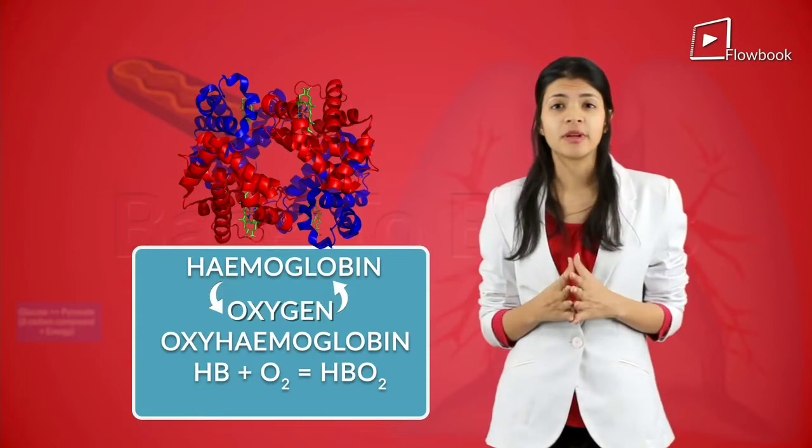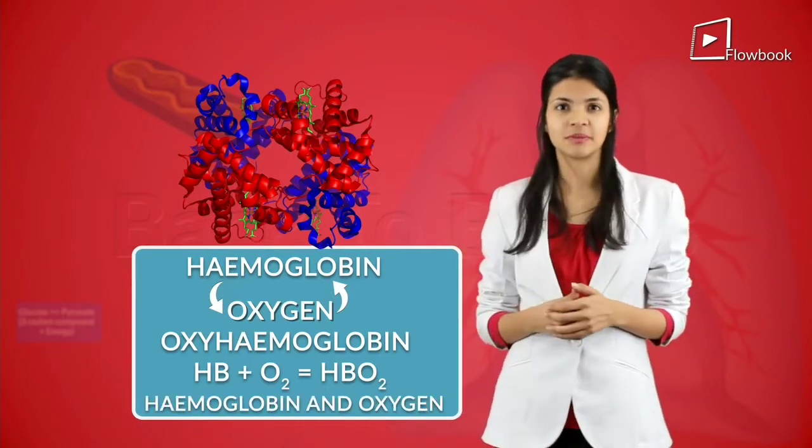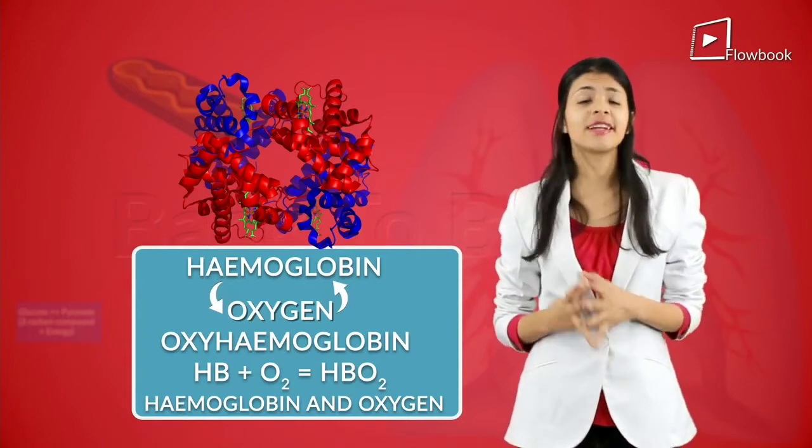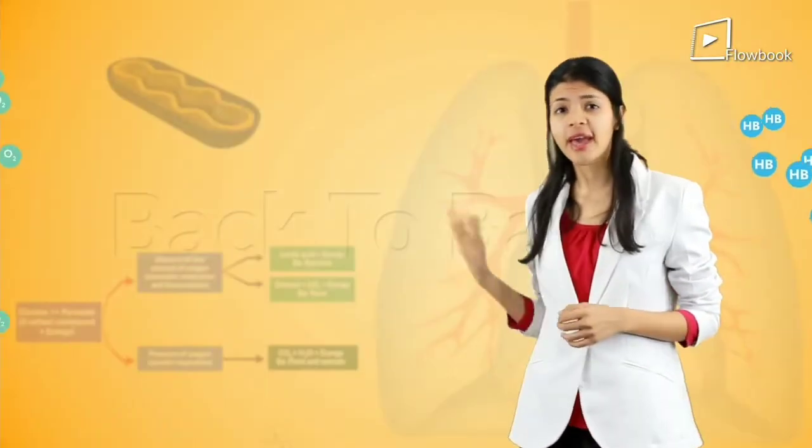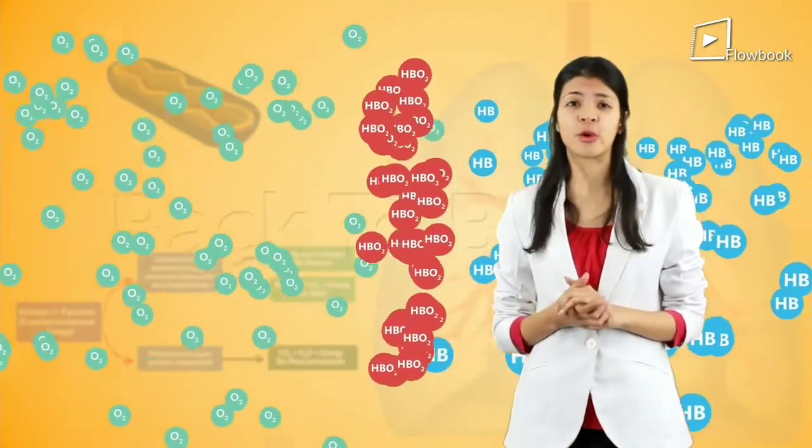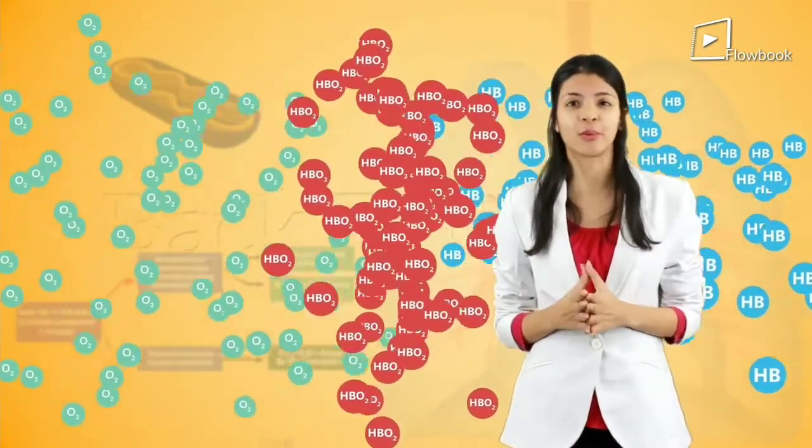Now, oxyhemoglobin can also split and give us hemoglobin and oxygen. Now, hemoglobin loves oxygen so much that if it is exposed to air at sea level, almost every molecule of hemoglobin will combine with oxygen to form oxyhemoglobin.